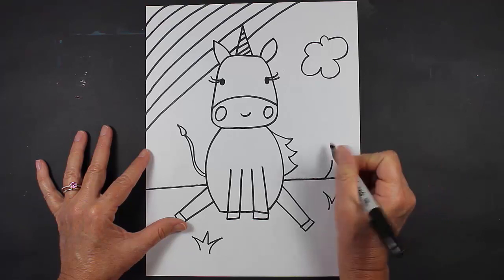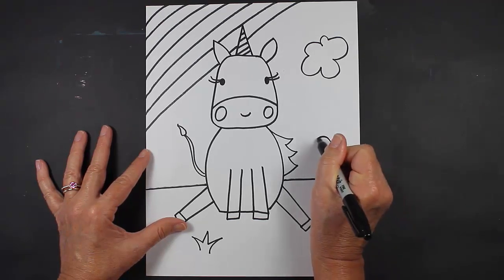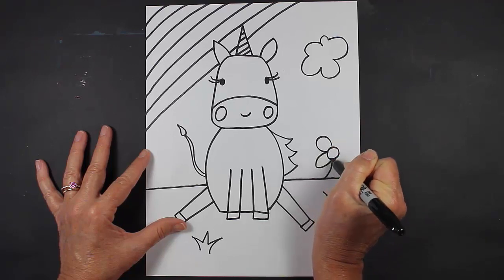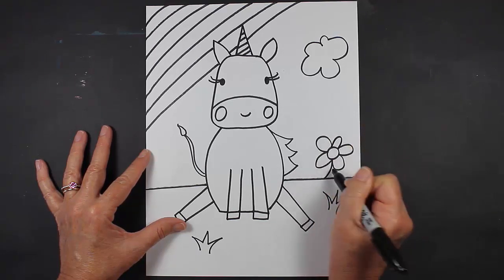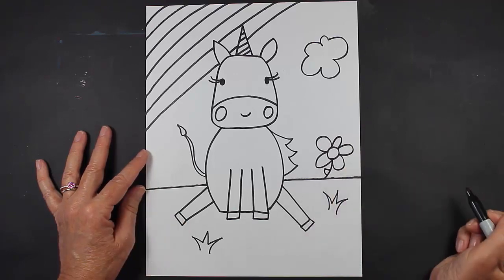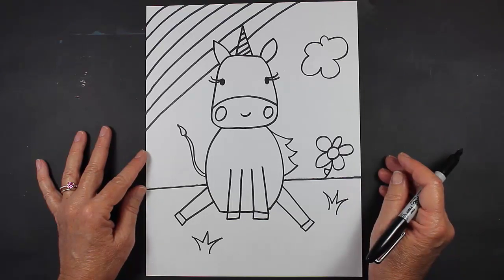So I have my stem in the middle part of my flower, and then my petals, and then a little leaf there. I'm really happy with that. I hope you enjoyed this lesson. I'll see you next time!